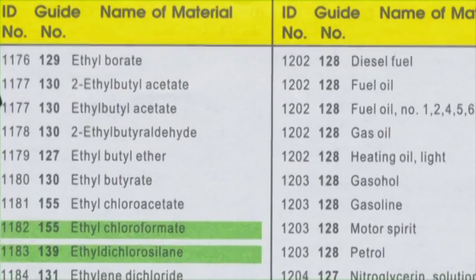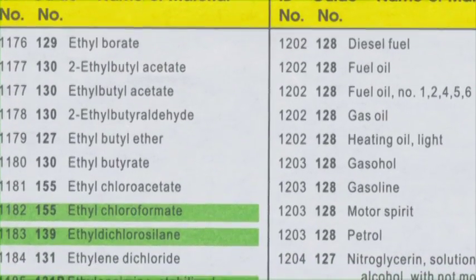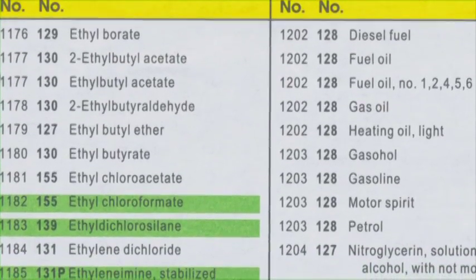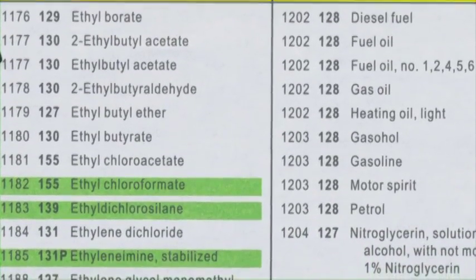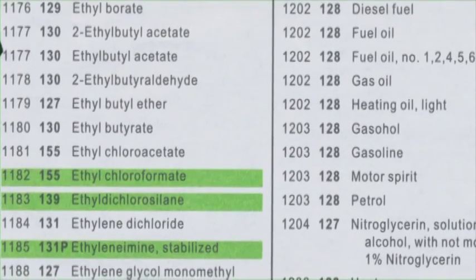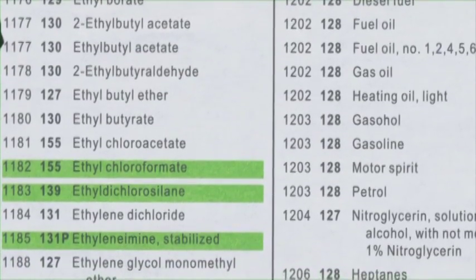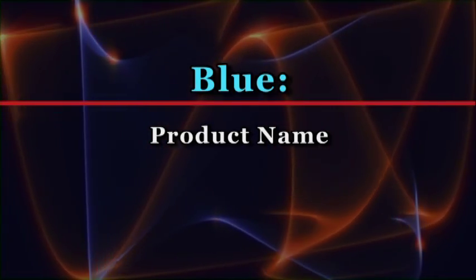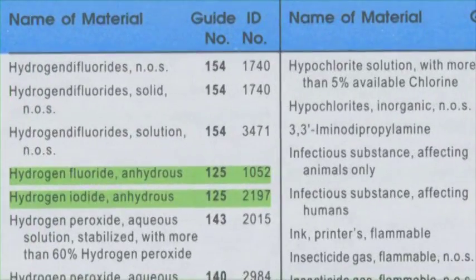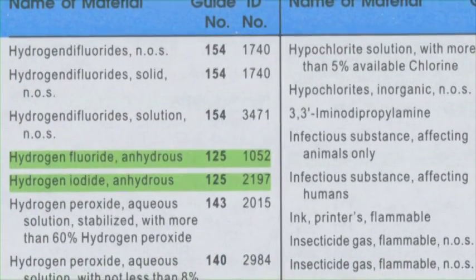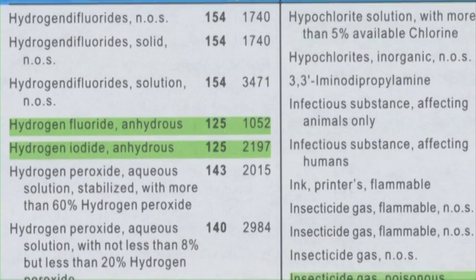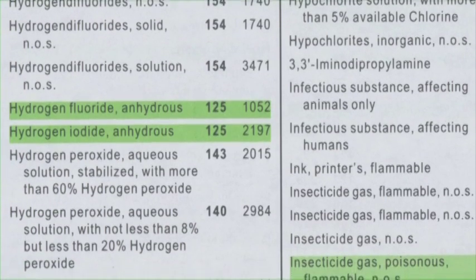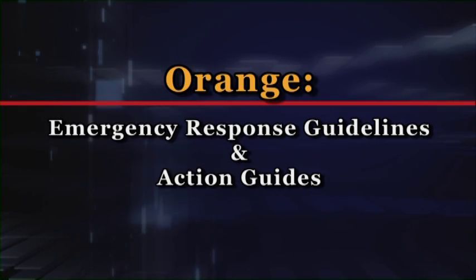The second section is yellow, which allows you to identify a substance by its ID number. These are four-digit numbers that will immediately identify what substance you're dealing with and allow you to take that information to the green section of the book. The blue section shows you how to identify substances by product name. These product names are sometimes located on the container, so look closely at the suspected threat.